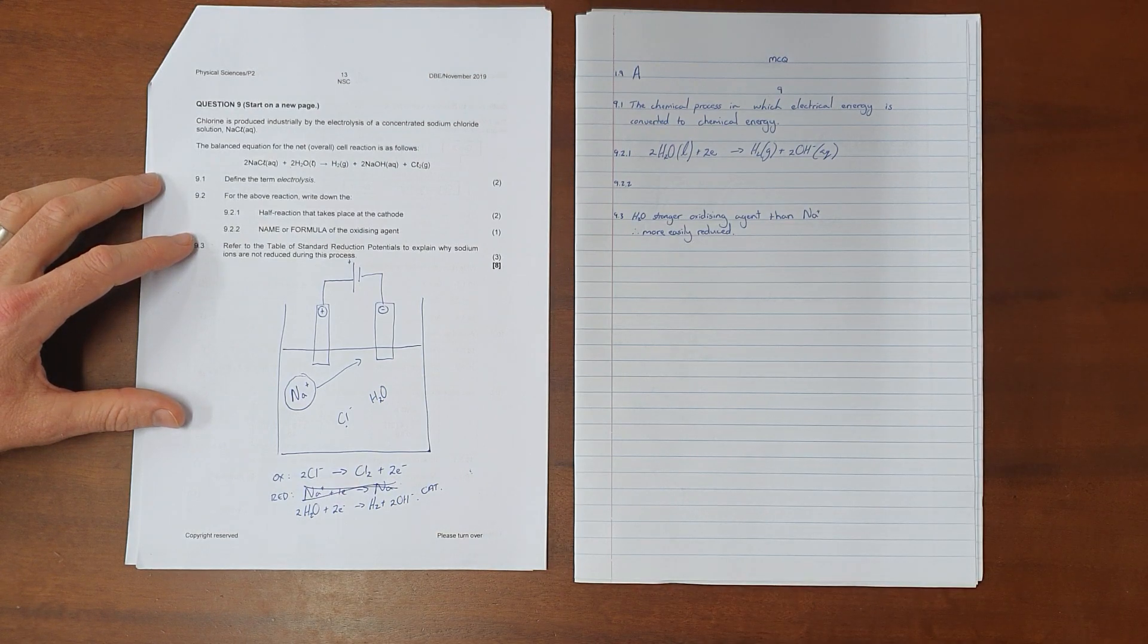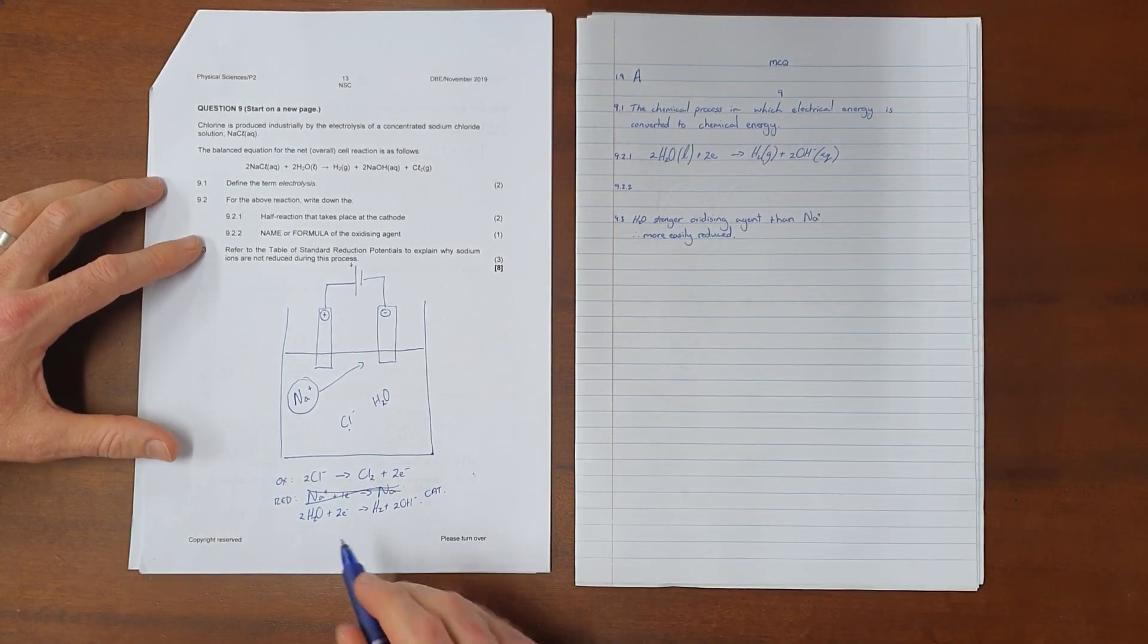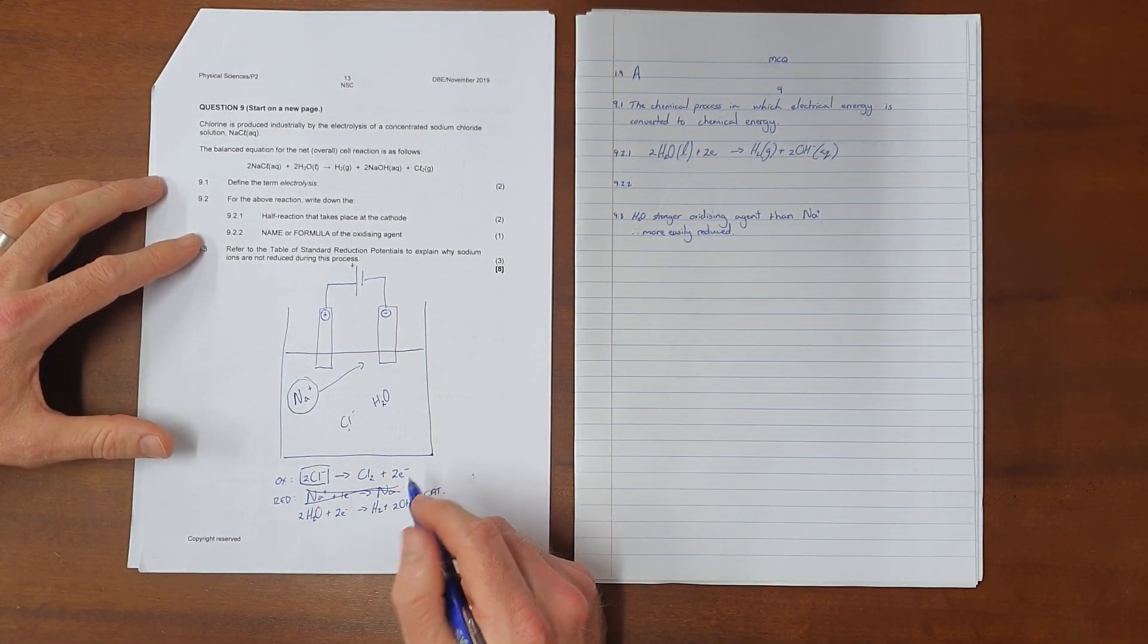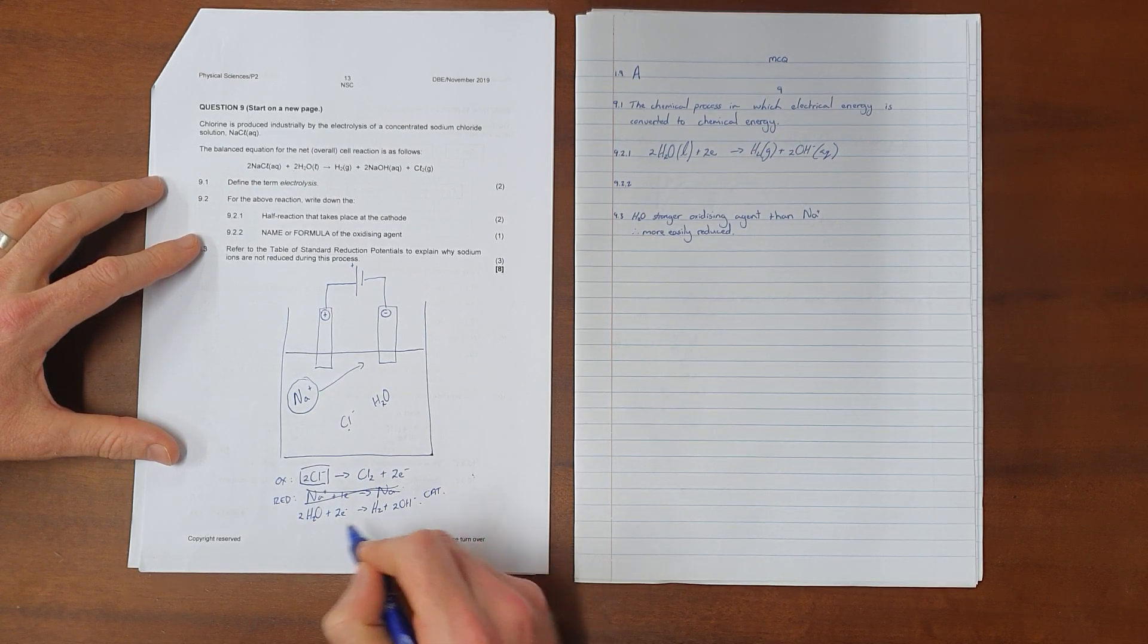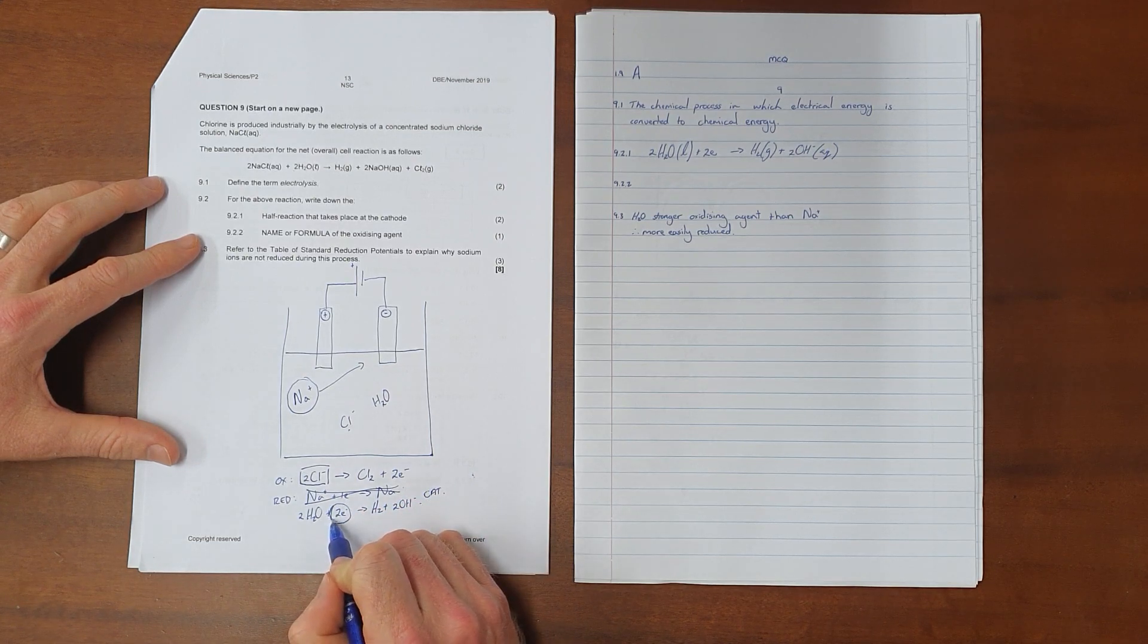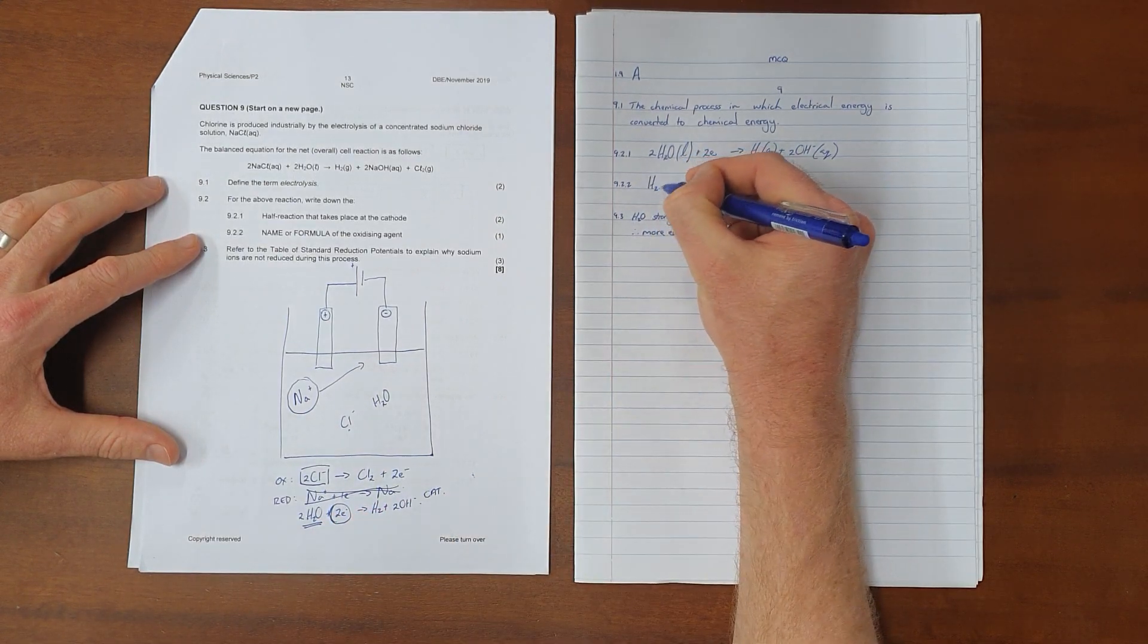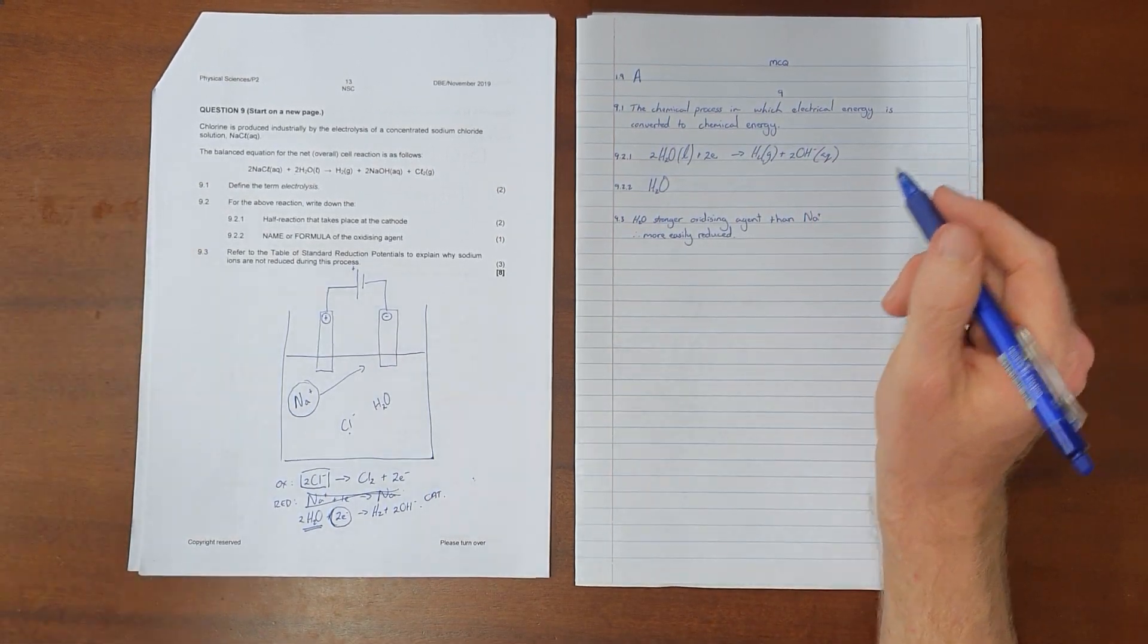Question 9.2.2: Write down the name or the formula of the oxidizing agent. Now we can see that the chlorine ions undergo oxidation - they are oxidized meaning they give off electrons. That oxidation is only possible because we have water that is willing to accept those electrons. So we say that water by being reduced makes oxidation possible, and so we say that our water molecule H2O is the oxidizing agent.